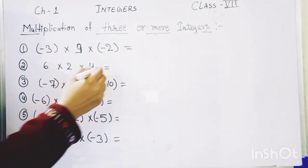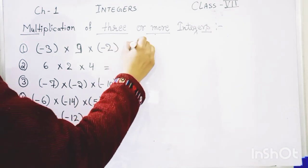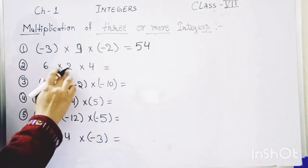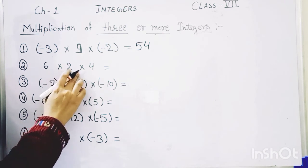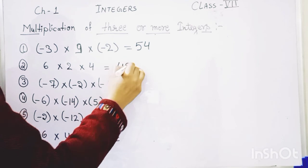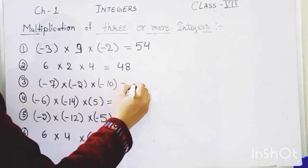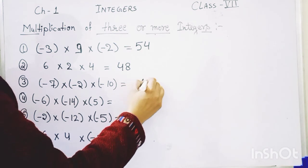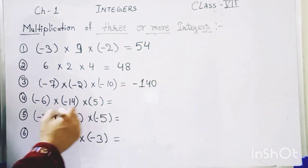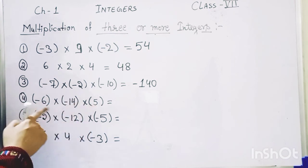The first answer is 54. The second, solving, gives us plus 48. The third gives minus 140. For the fourth one, two of the integers are negative and the third is positive.